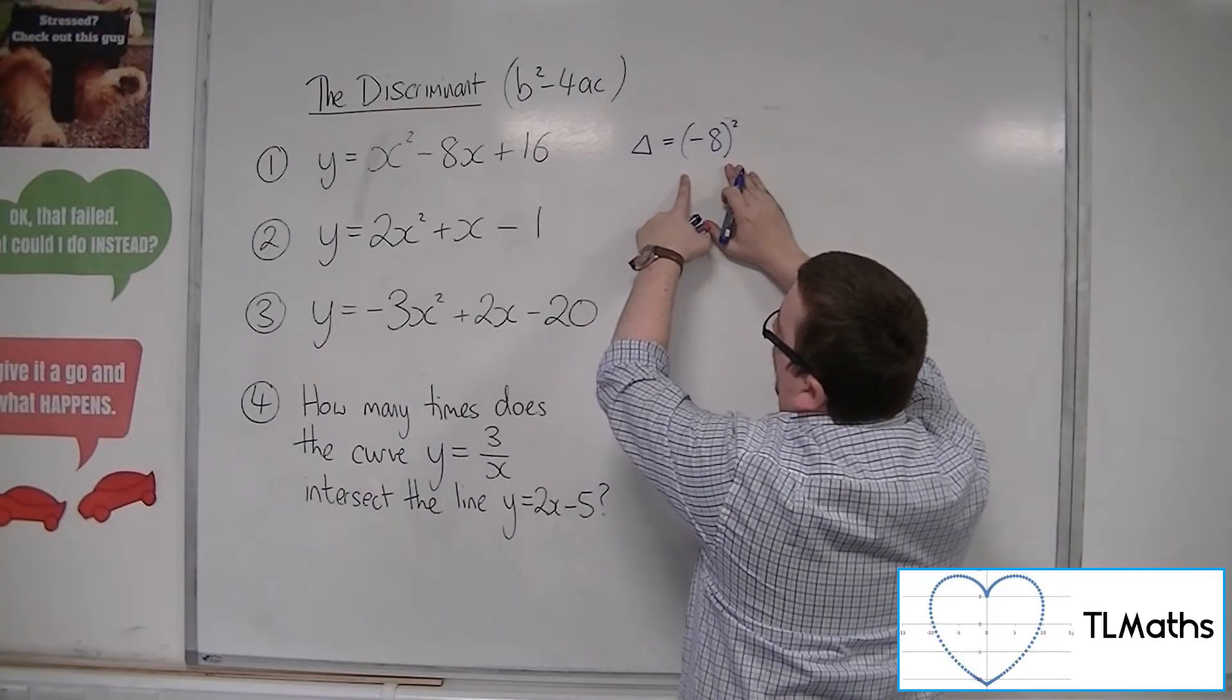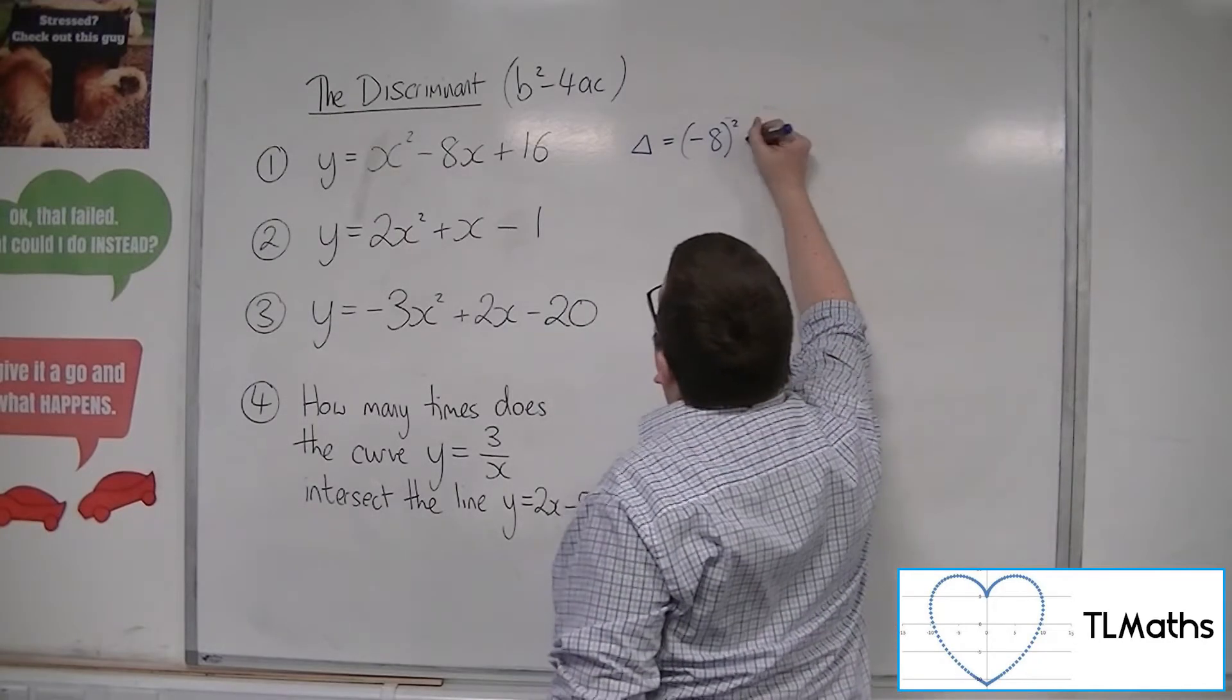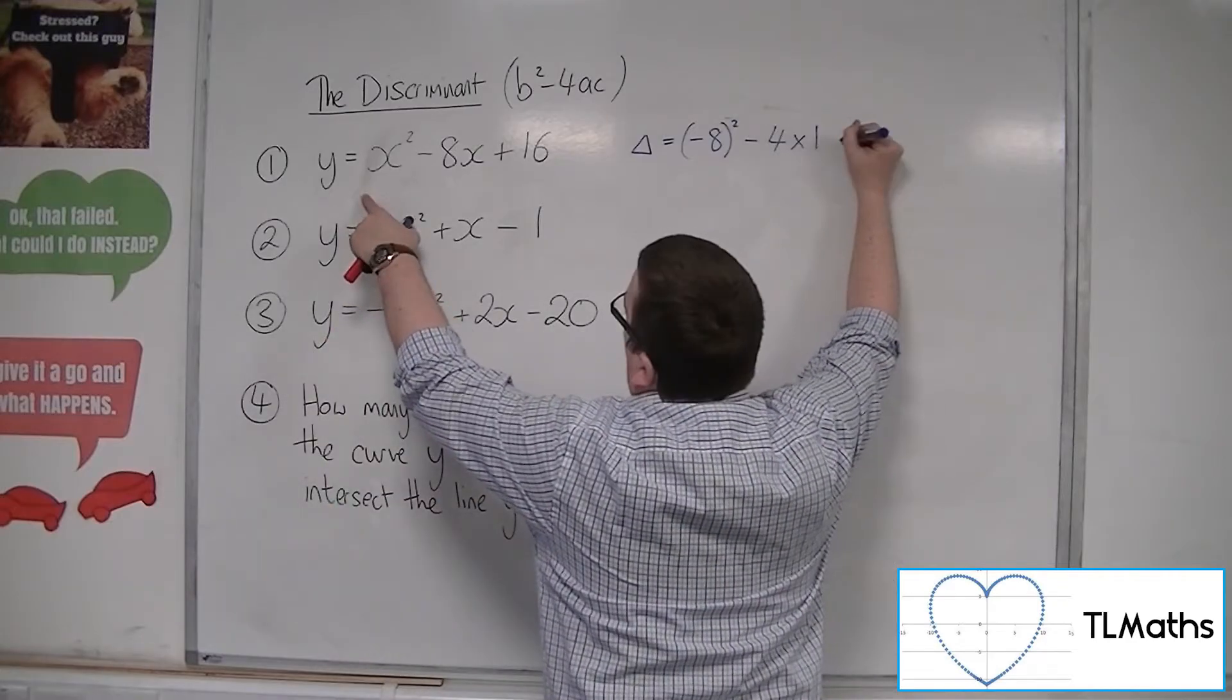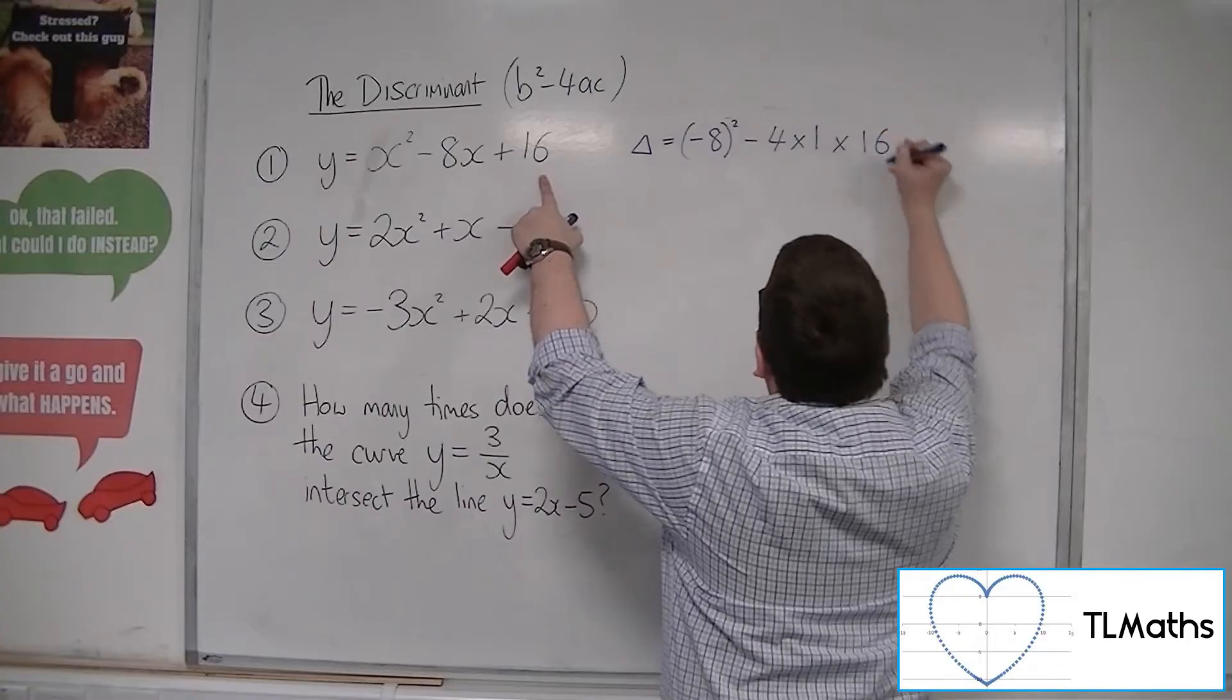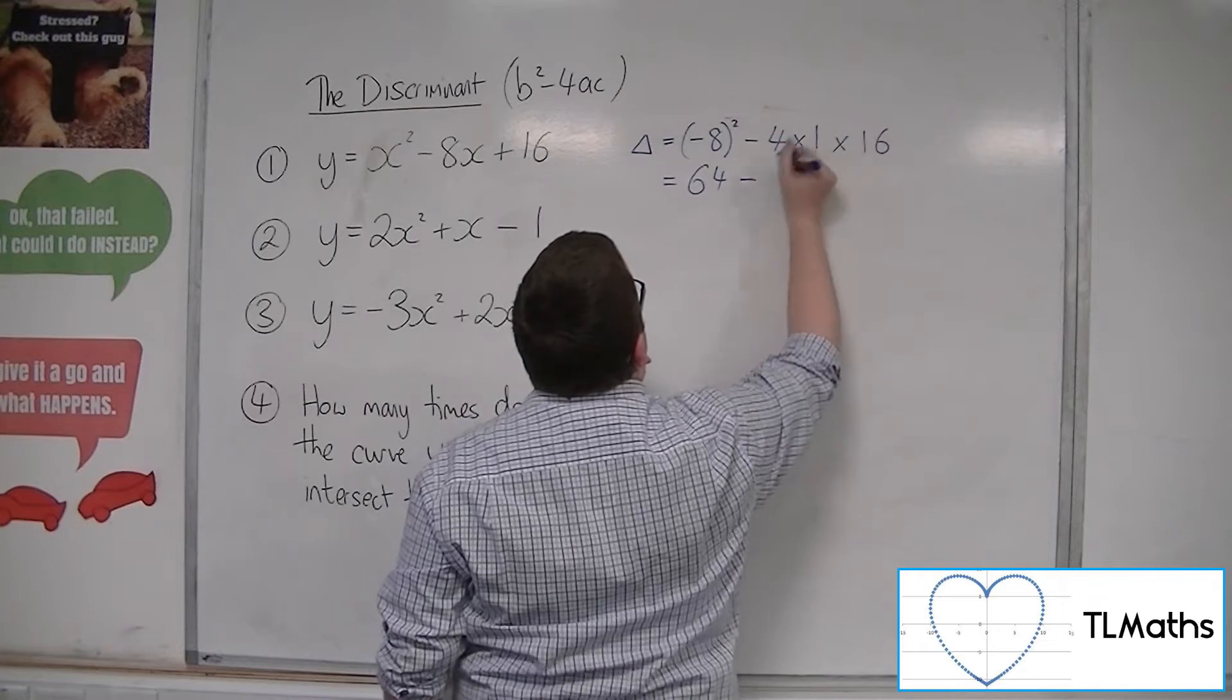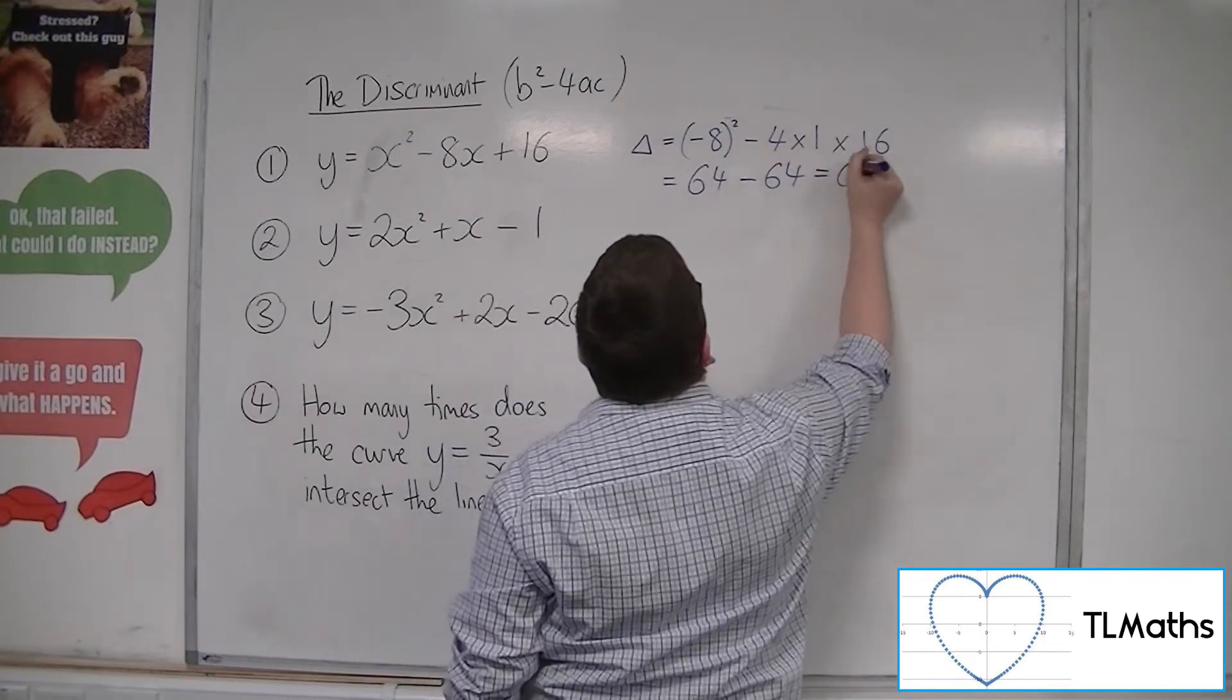And that makes you wary of squaring both the minus sign and the number. Take away 4 times a, which is 1, the coefficient of x squared, times by c, which is 16. So we get 64 take away, well, 4 times 1 times 16 is 64. And so that is equal to 0.